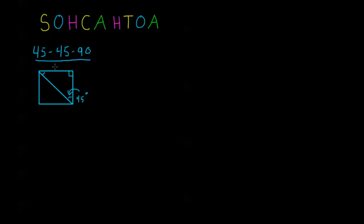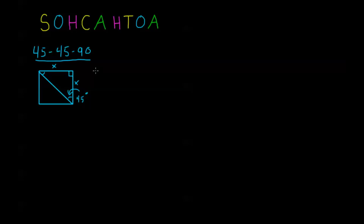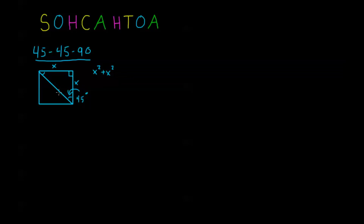Let's say that the square had a side length of X, so both of these legs are X. From the Pythagorean theorem, the sum of the squares of the two smaller sides — X squared plus X squared — equals the square of the hypotenuse. So X squared plus X squared is 2X squared, and that equals Y squared, where Y is the hypotenuse.